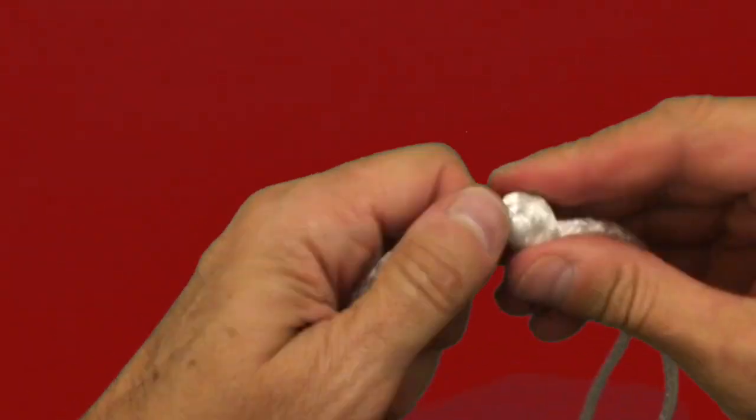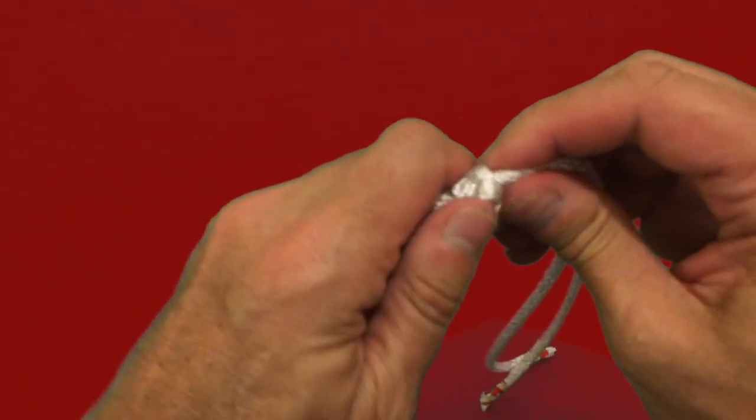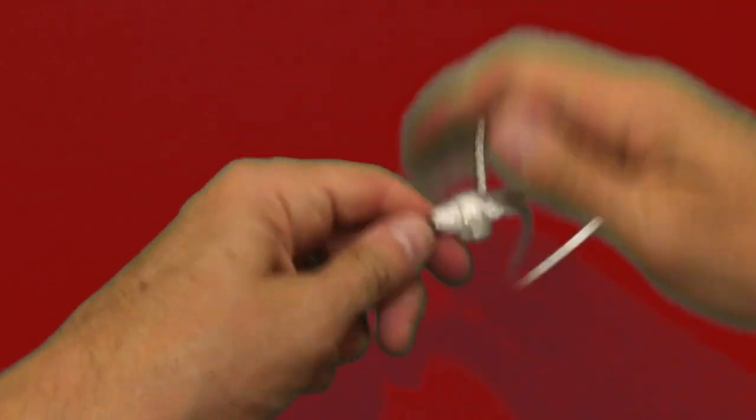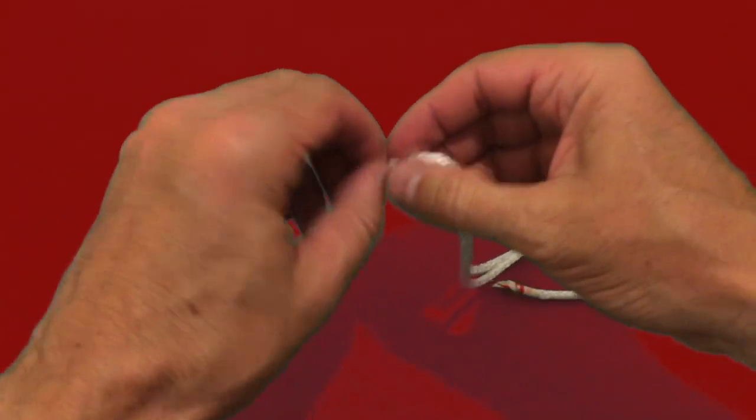With all of the ends of the line teased down upon themselves, it's now the final step to grab each of the tails and pull them as tight as possible. To get extra strength in this case you could grab a pair of pliers to really put some pressure on it.